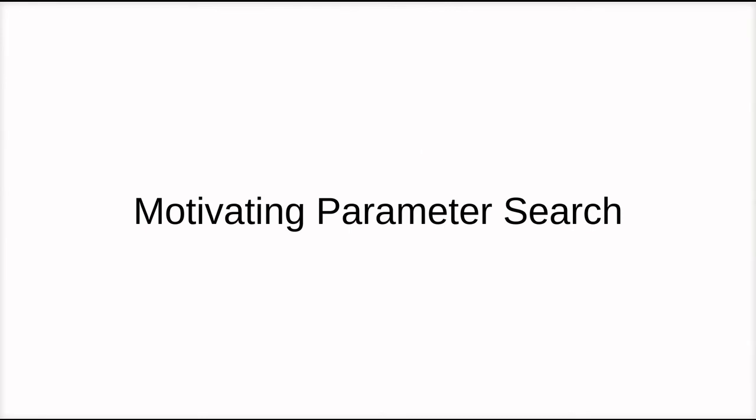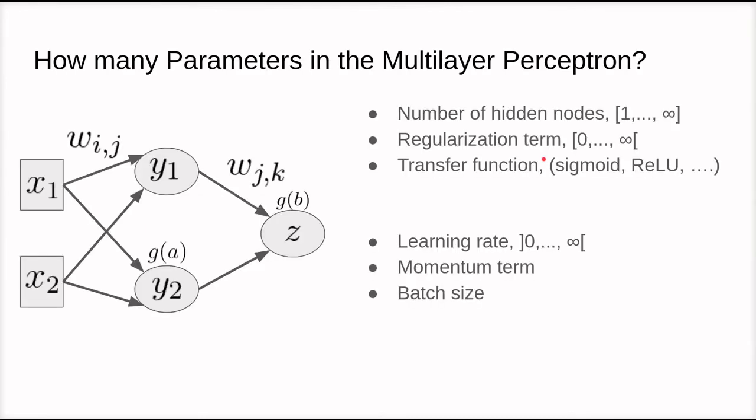So let's start by motivating the parameter search problem. If we take a simple multilayer perceptron, there are a lot of parameters to tune. Well, I say a lot. There's at least six parameters to tune. For example, the number of hidden nodes, the regularization term if we're using regularization in the training algorithm, what transfer function we're using, the learning rate, the momentum term, how much previous updates and the current update are weighed, and the batch size, amongst other things. And this is from a very simple two-layer network.